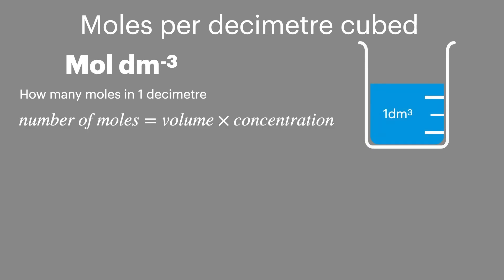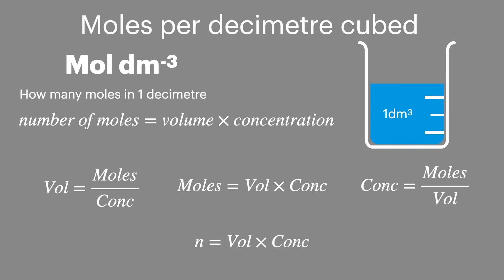We can use this equation to calculate the number of moles of solution. That's number of moles equals volume times concentration. This can often be shortened to moles equals vol times conc, and it can be rearranged to give volume and concentration. It's also often quicker to change out the moles for the letter n, and you'll see this in lots of your calculations.